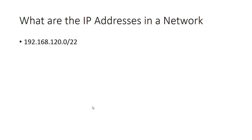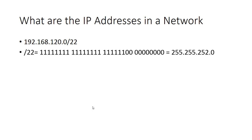192.168.120.0/22. Now this is a CIDR notation of /22. If you convert this into binary you will have 22 ones, and then the rest of the 32 bits will be zeros. Split into octets — that means eight bits in each octet and there will be four octets. Convert each octet to decimal and you will get 255.255.252.0.